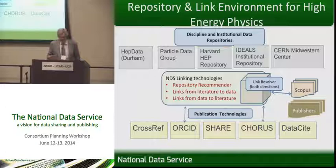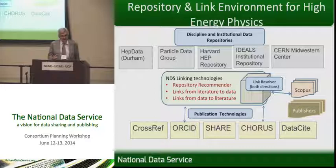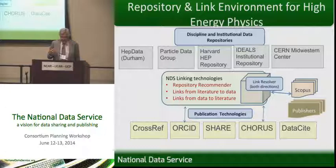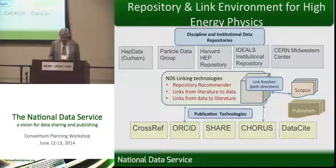Doug Beck's world sort of looks like this. At the top, he's saving data in a repository called HEP Data — high-energy physics data at the University of Durham. There's a Particle Data Group which also provides access to high-energy physics data. He stores data for a specific project in a repository at Harvard, which gets moved into the IDEALS institutional repository — the University of Illinois institutional repository. There's also a CERN Midwestern Center that has a lot of high-energy physics data. The service we're looking at is trying to link publication data with all of those repositories, using CrossRef, ORCID, and DataCite.